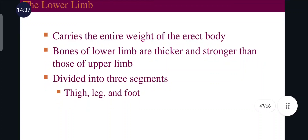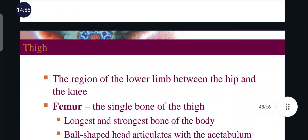After the pelvic girdle, the next part of the appendicular skeleton is the lower limbs. Lower limbs carry the entire weight of the erect body, so the bones are thicker and stronger than those of the upper limbs. They are divided into three segments: thigh, leg, and foot.